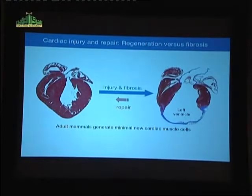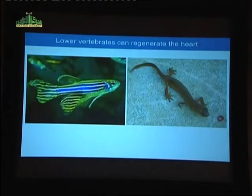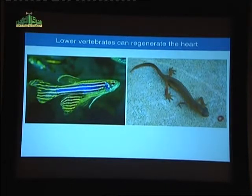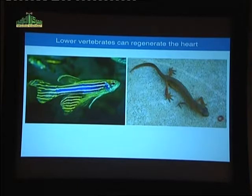There's nothing inherent in the heart, per se, that is incompatible with regeneration. In fact, some organisms have solved this problem. Zebrafish and many types of amphibians — newts, salamanders — can regenerate large portions of their heart following injury, as they can also regenerate other organs. But clearly the adult mammalian heart, whether mouse or human, lacks any appreciable regenerative potential.